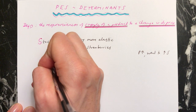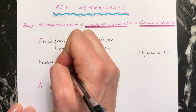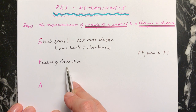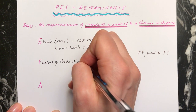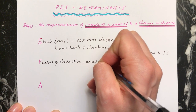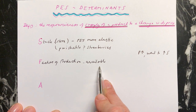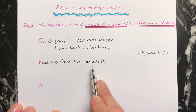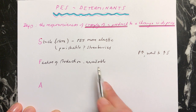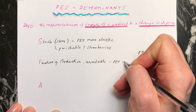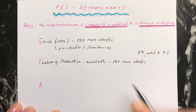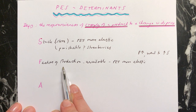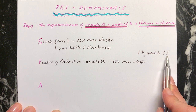F stands for factors of production — land, labour, capital, and enterprise. If you have factors of production available to use to produce something, and the price goes up and you want to supply more, you'll be able to because your factors of production are available. If lots of them are available, your PES will be more elastic. However, if you don't have factors of production available at short notice, you're not going to be able to suddenly increase your supply when you want to.